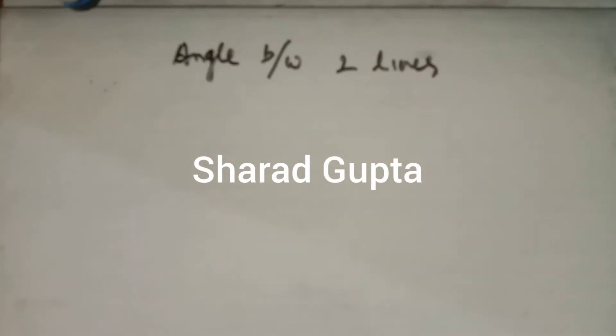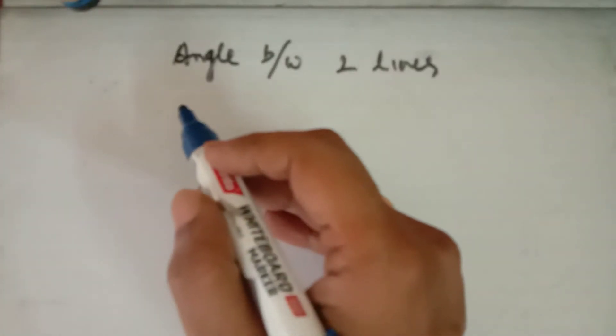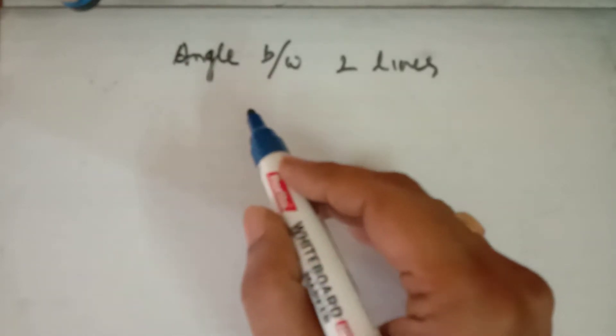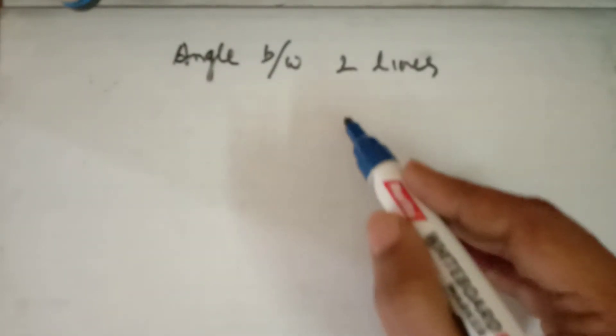This is lecture number 2 for the chapter Straight Lines for class 11th. In the last lecture we discussed the slope of a line, the condition for parallel lines, and the condition for perpendicular lines. Now we will discuss how to find the angle between two lines.